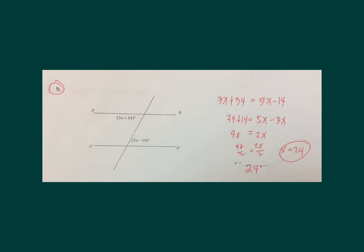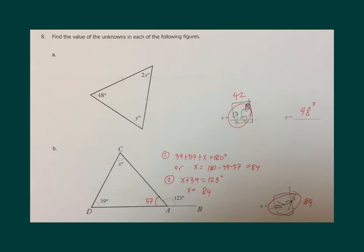34 plus 14 is 48. 5X minus 3X is 2X. To get X, divide by 2 — so X must be equal to 24. That's the value of X we are looking for.